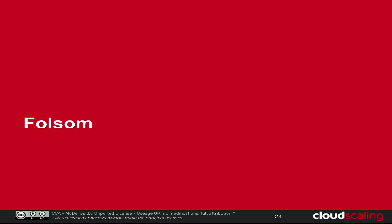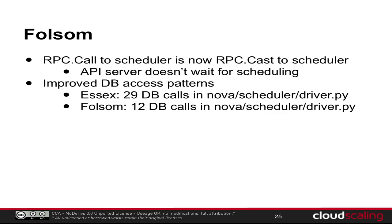In Folsom: I haven't had a chance to run this on real hardware, but on small scale it's better. The key improvement is that the RPC call-instead-of-cast problem has been fixed, so no matter how slow everything is you'll get a response for a run-instances request right away — that makes slow scheduling less of a big deal. Additionally, the number of database calls in the scheduler has gone down: in Essex there were 29 database calls in the Nova scheduler driver code, now there are only 12 in Folsom.